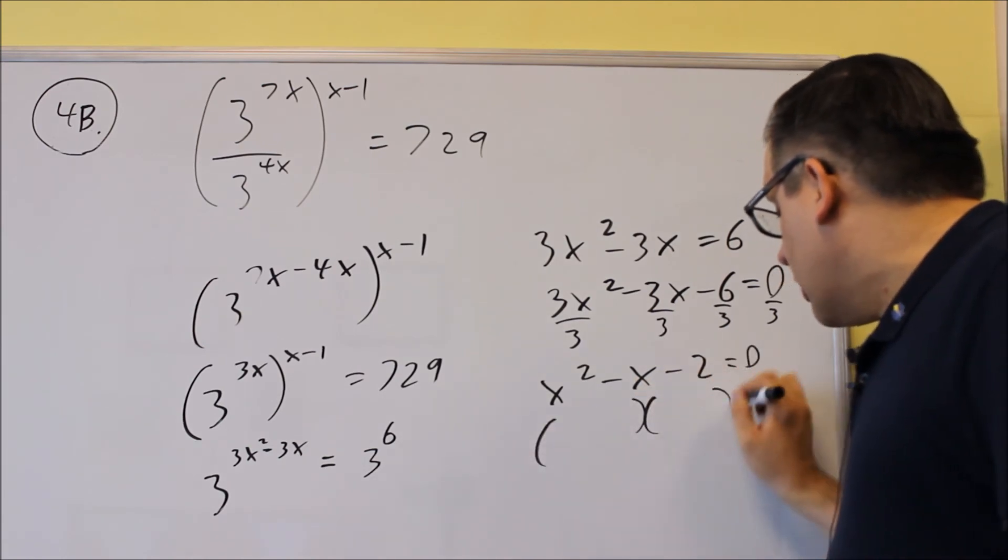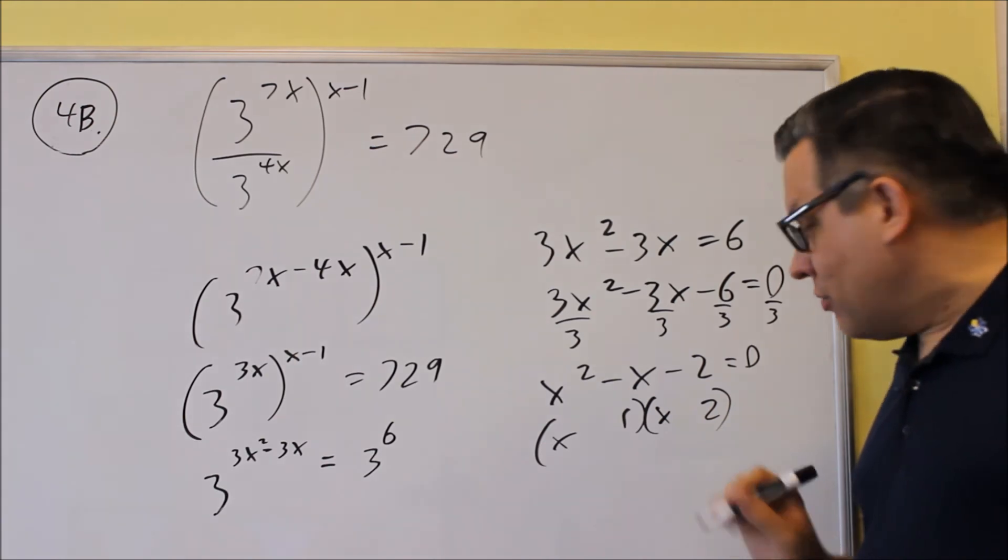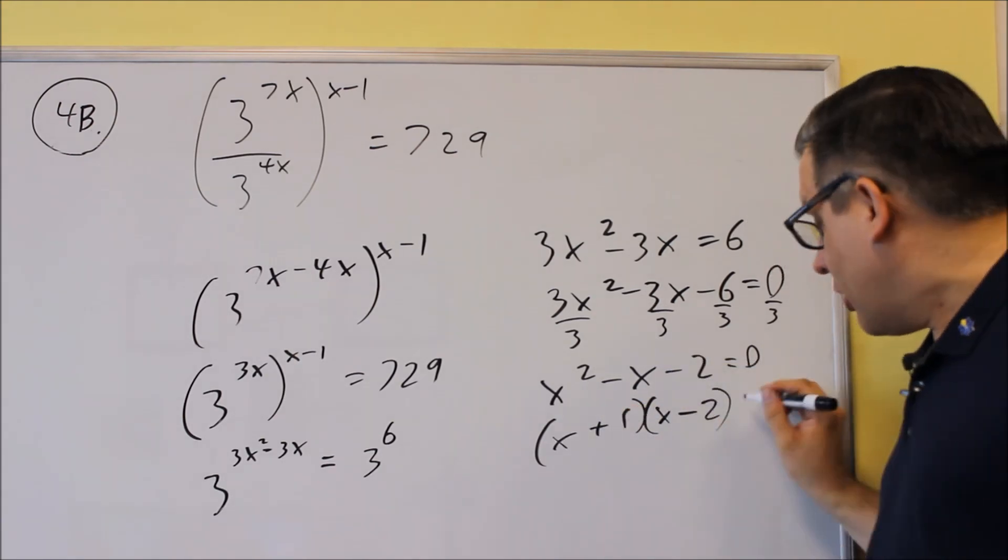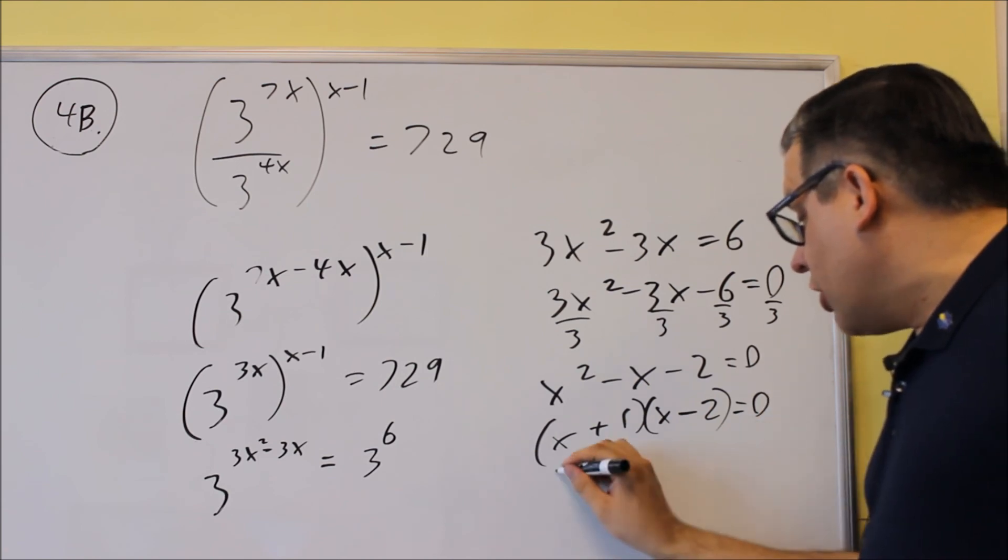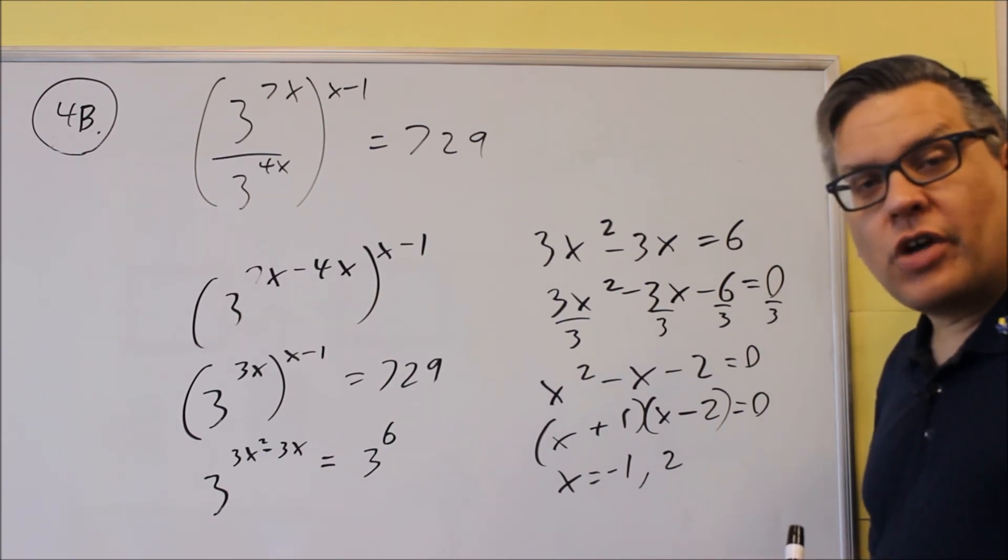This last one we're just going to factor. We have 1 and 2. You have to put a negative there to get a negative term in the middle. And then you'll get x equals negative 1 and positive 2, and those would be your two answers.